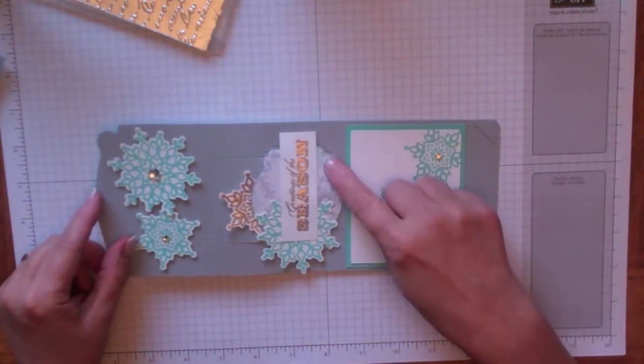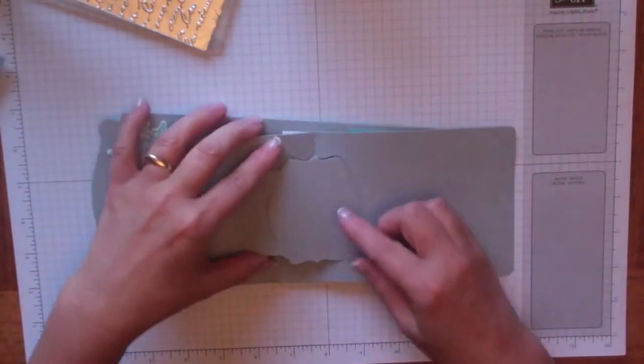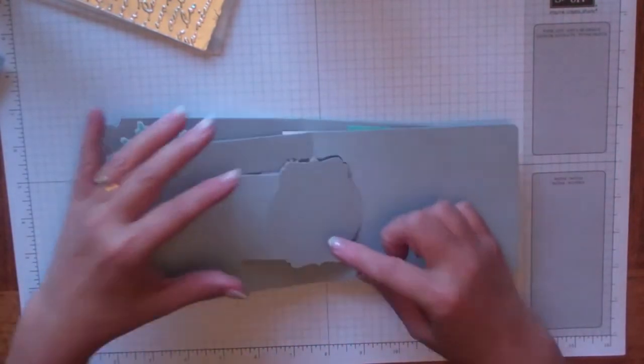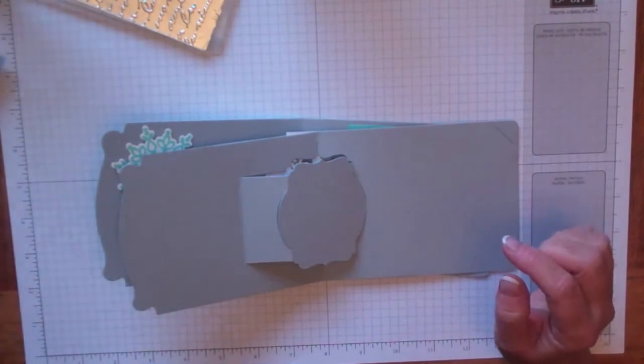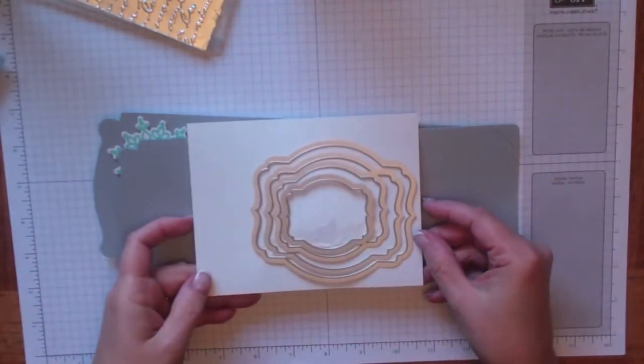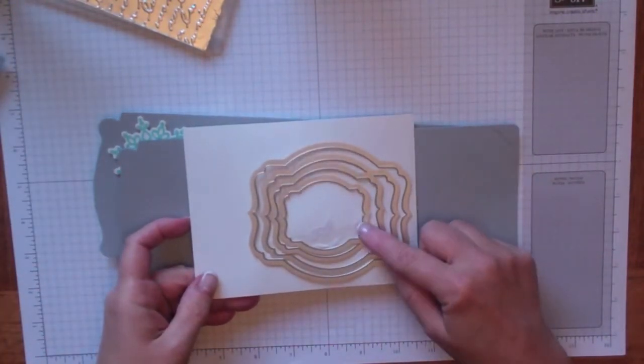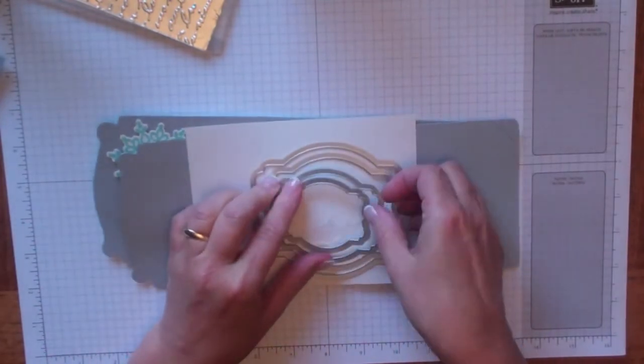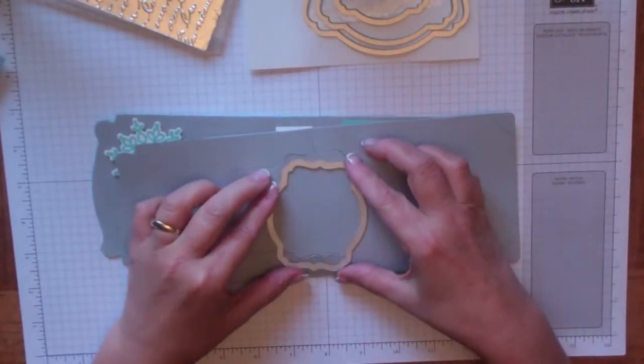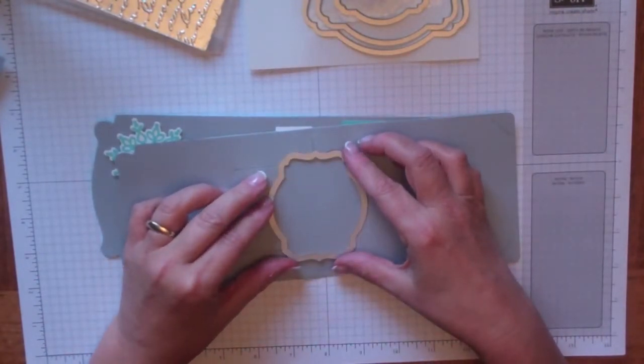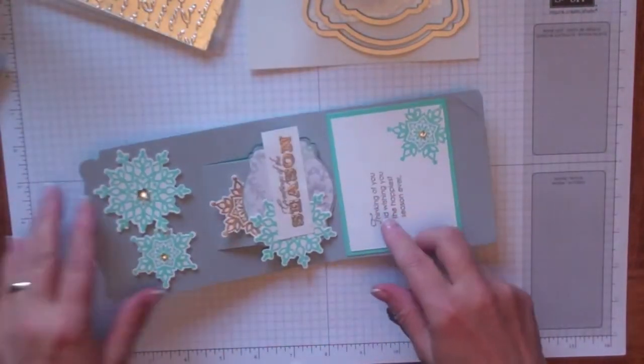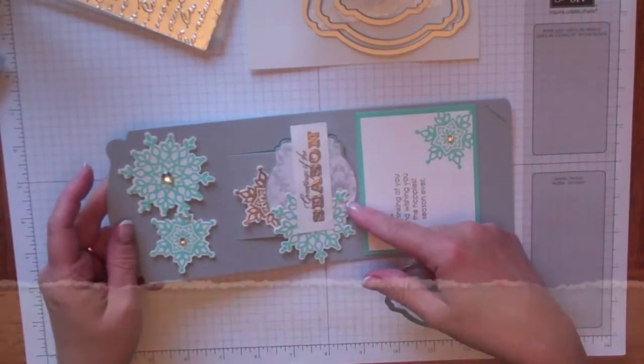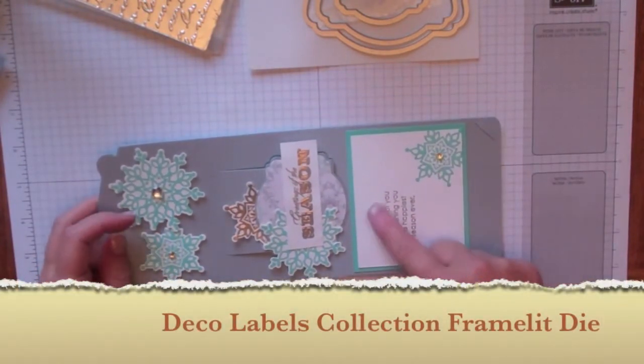On the inside, just to give you a look, this piece here, which is actually going to be on top of this label, can be made using the Deco dies here. There's four dies, and actually I believe it is this one that's going to work. Yes. So you're going to cut this shape out of designer paper and then it's just going to fit directly on top of that. And then I just used rhinestones to embellish.